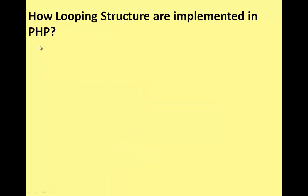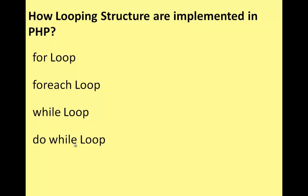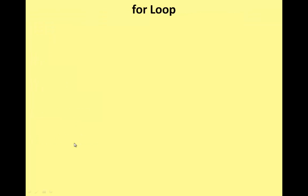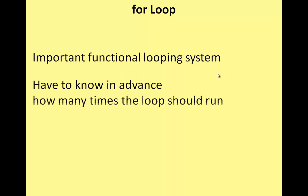In PHP, the loop types are: for each loop, while loop, do-while loop, and for loop. These form the important functional looping system.